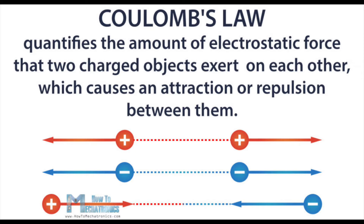The first variable is force. The electrical force, like all forces, is typically expressed in the unit Newton. The strength of the electrical interaction is a vector quantity that has both magnitude and direction. The direction of the electrical force is dependent upon whether the charged objects carry like charges or opposite charges, and upon their spatial orientation.